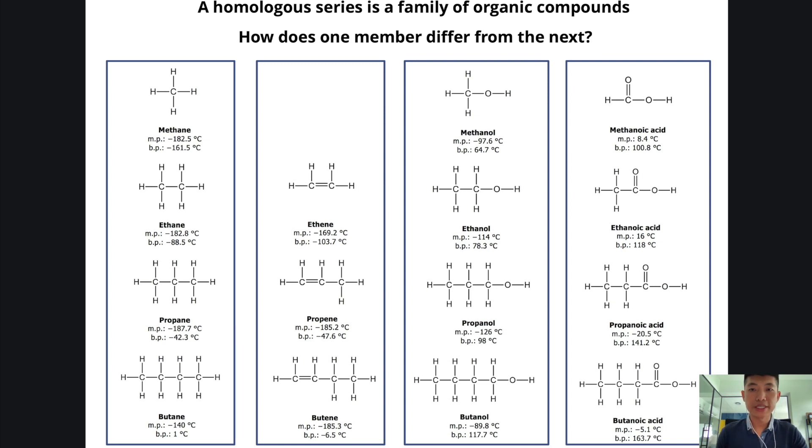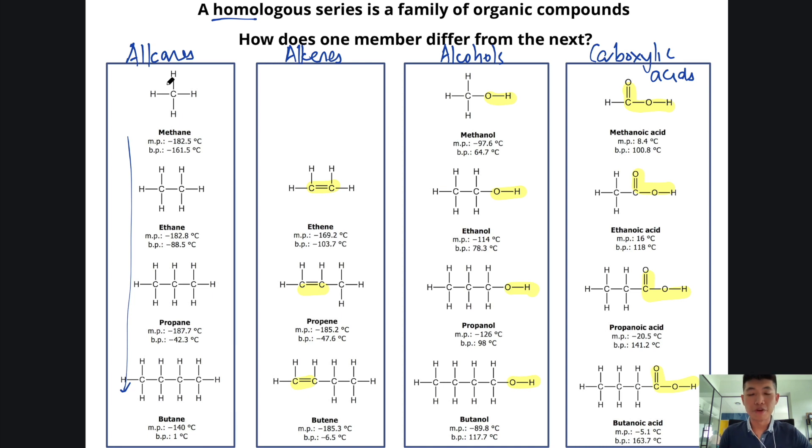That brings us back to our original arrangement of this thing called homologous series. In science, the term homo-, the prefix homo- means same. So homologous series means that this family, there are some similarities between them. We have alkanes, we have alkenes, we have alcohols, and we have carboxylic acids. Within each family, there are some similarities. What kind of similarities? They have the same functional group. They have a trend in the properties like melting and boiling point. And they will have the same general formula.